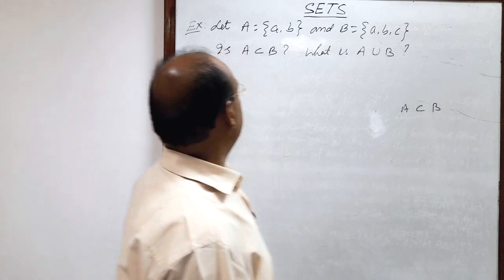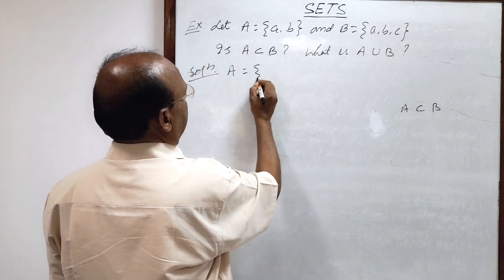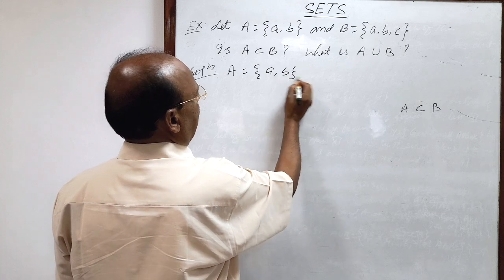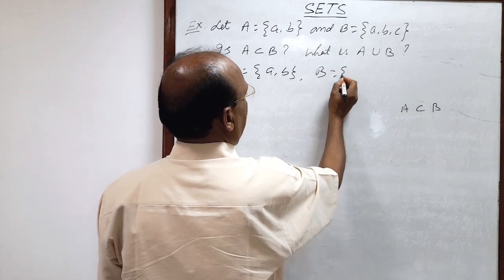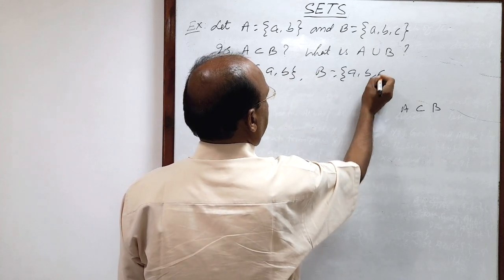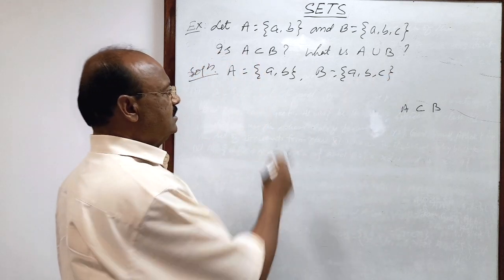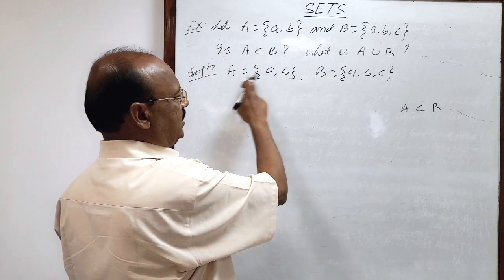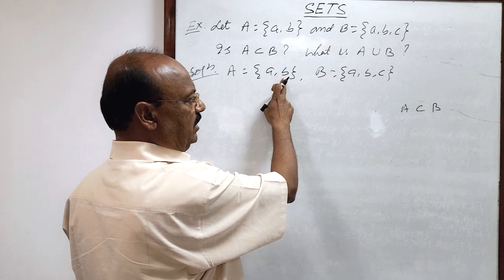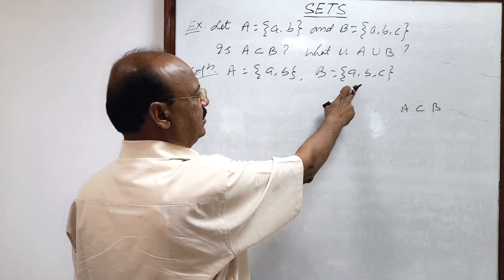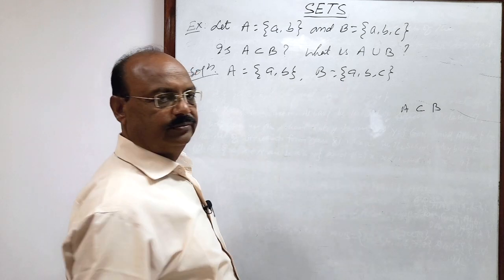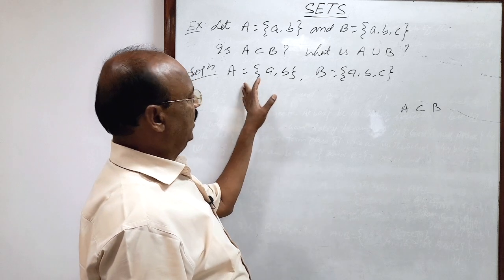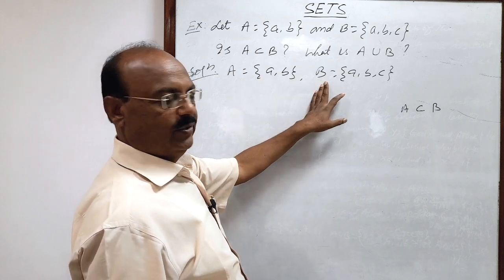Here two sets A and B are given. Set A has elements a, b and set B has elements a, b, c. Since both elements of set A, a and b, are available in set B, therefore A is a subset of set B.